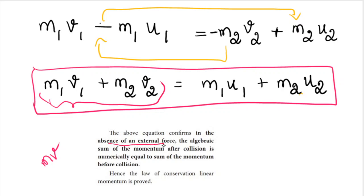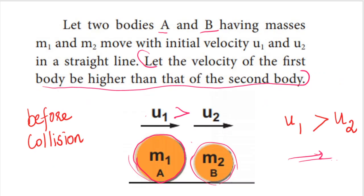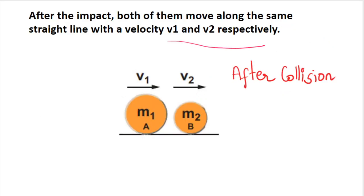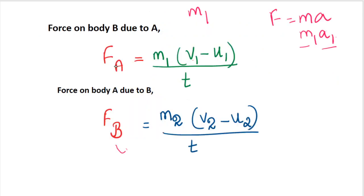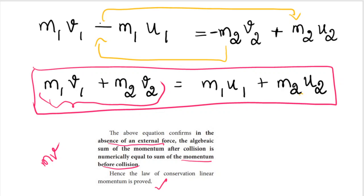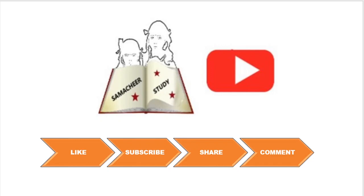In the absence of external force, the algebraic sum of momentum after collision is numerically equal to the sum of momentum before collision. Hence the law of conservation of linear momentum is proved. To summarize: consider two bodies, draw the diagram for before, during, and after collision, write force expressions for FA and FB, apply action equals minus reaction, do the calculation, and you get the proof. Hope you understand this concept. If you like this video, please subscribe and share it with your friends. Thank you so much for watching.